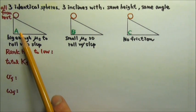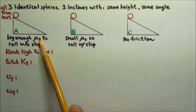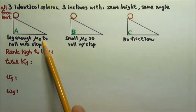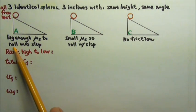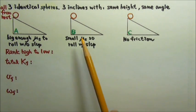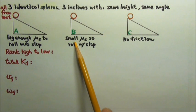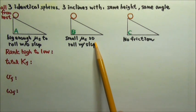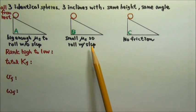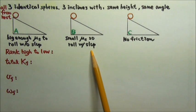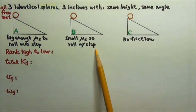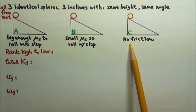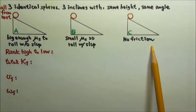Incline A has a large enough coefficient of static friction so the sphere can roll without slipping. Incline B has friction, but the coefficient of friction is too small, so the sphere rolls with slipping down the incline. Incline C has no friction at all.